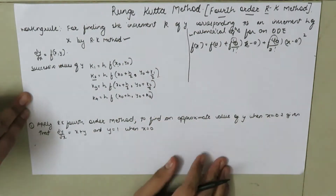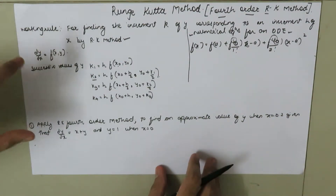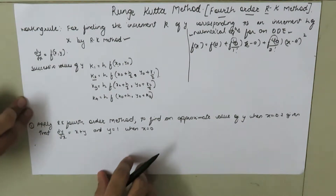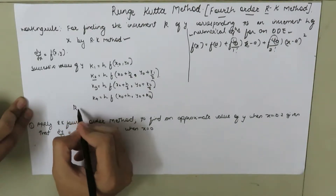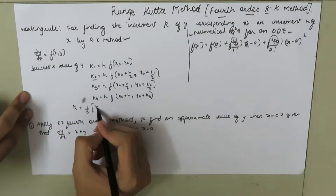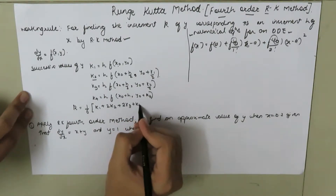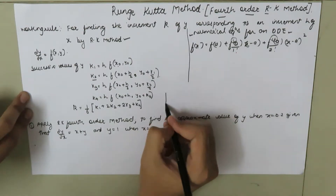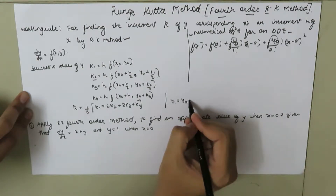Various software packages can solve ODEs using the RK method, but this theoretical approach gives a specific idea of how that software actually works. To find the weighted mean k, we use: k = (1/6) * (k1 + 2*k2 + 2*k3 + k4). And finally the new value y1 = y0 + k.